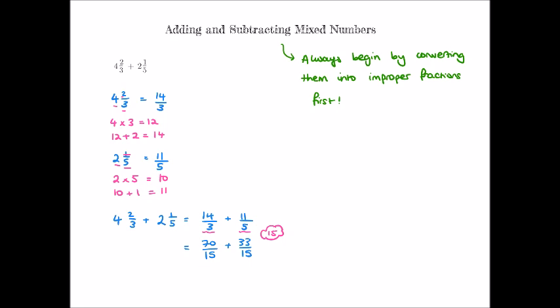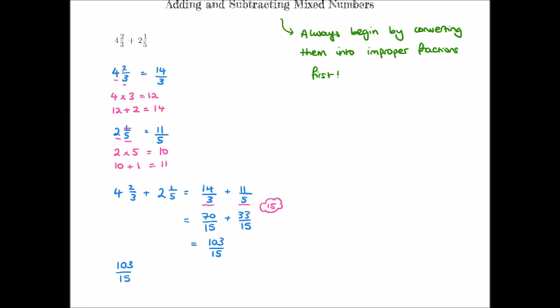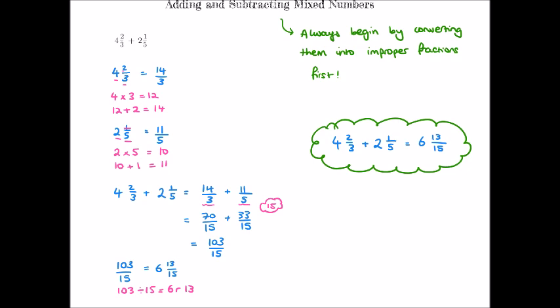Adding seventy and thirty-three gives one hundred and three fifteenths. We need to convert this back to a mixed number: one hundred and three divided by fifteen gives six with a remainder of thirteen. The denominator stays the same, so one hundred and three fifteenths equals six and thirteen fifteenths. Therefore four and two thirds plus two and one fifth equals six and thirteen fifteenths.